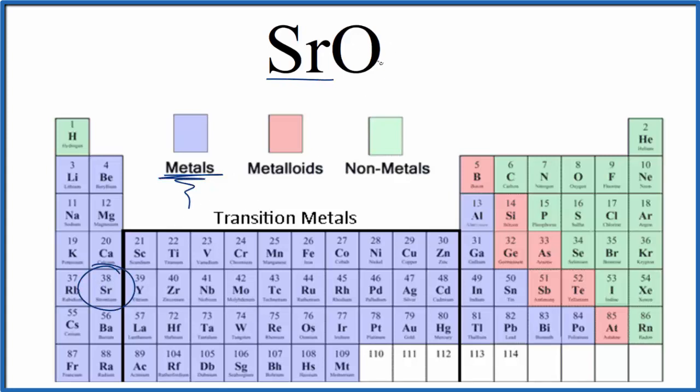Strontium is a metal. Oxygen, that's right here. Oxygen, that's a non-metal. We have a metal and a non-metal, we have an ionic compound.